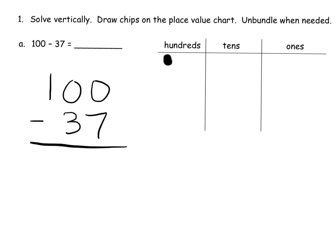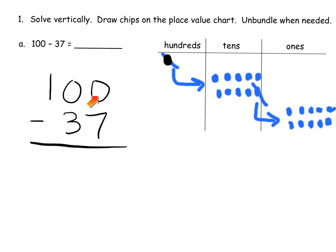Now we can subtract. We're going to take away seven ones — one, two, three, four, five, six, seven — which leaves us with three ones. Then take away three tens — one, two, three — which leaves us with six tens. So our answer is 63.